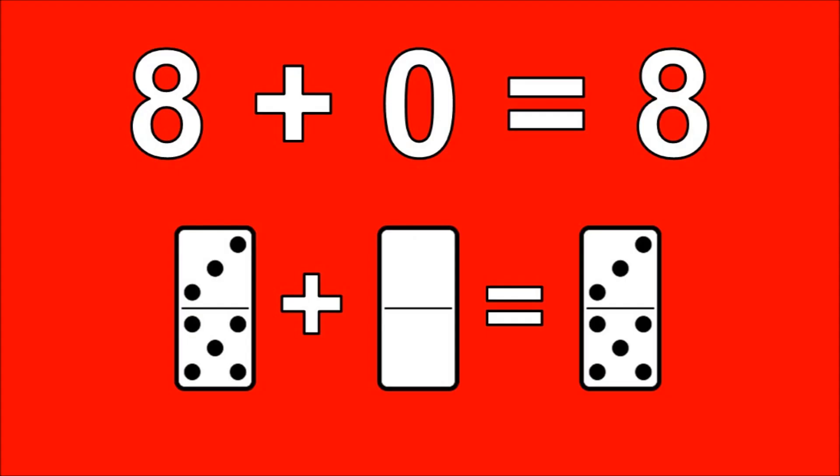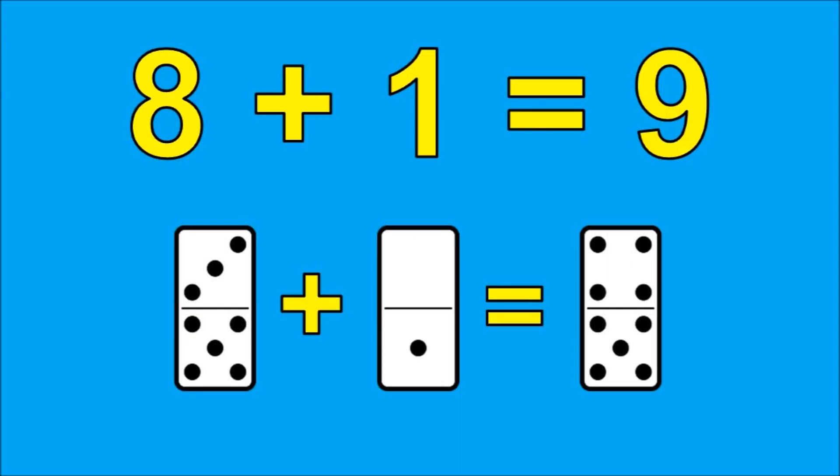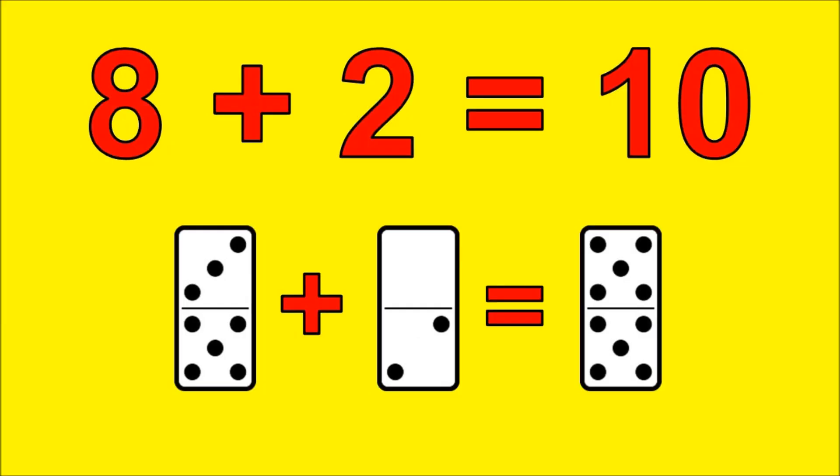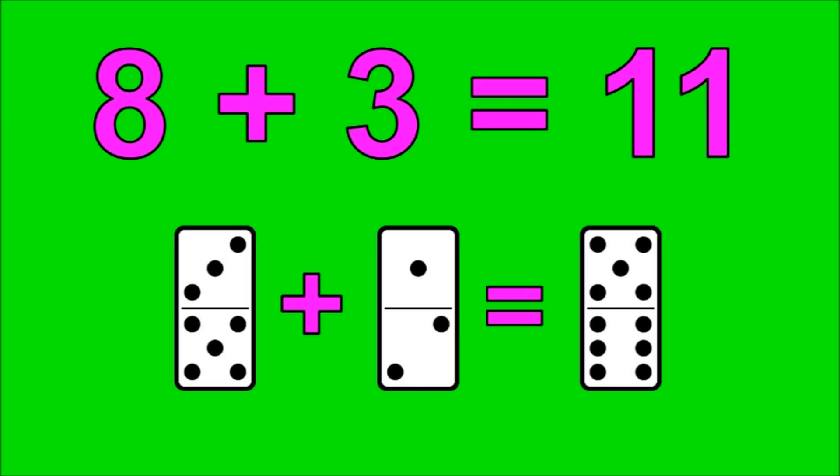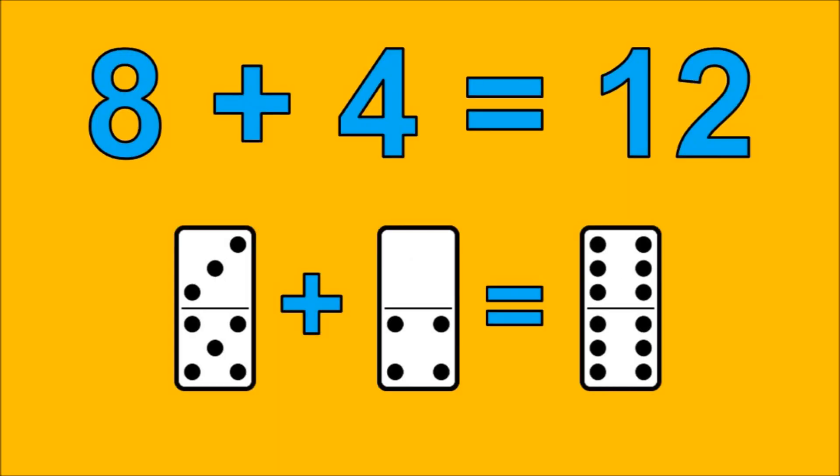Let's do it! 8 plus 0 is 8. 8 plus 1 is 9. 8 plus 2 is 10. 8 plus 3 is 11. 8 plus 4 is 12.